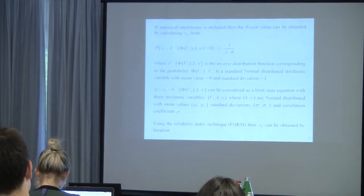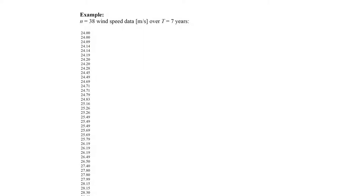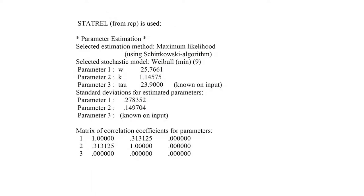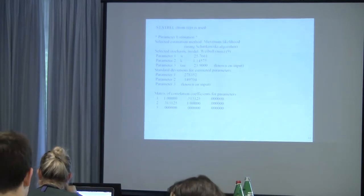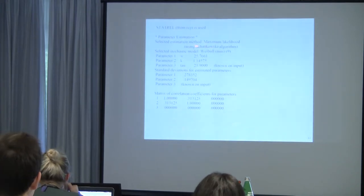There is a small numerical example to illustrate this. Some wind speeds are selected over a period of seven years — 38 data points extracted from each storm — and fitted to a Weibull distribution using software called STATRAL. Some of you may have heard of this program, which has tools to obtain distribution parameters and fit them to data using the maximum likelihood method.